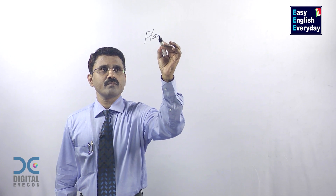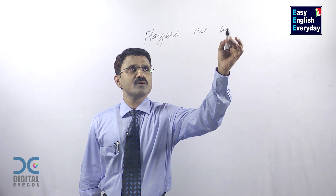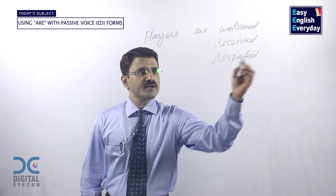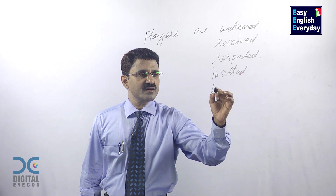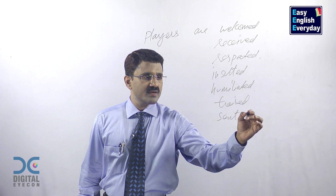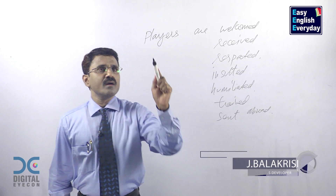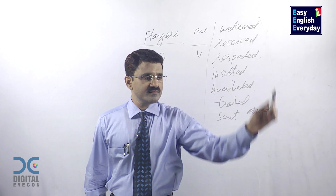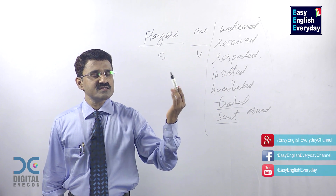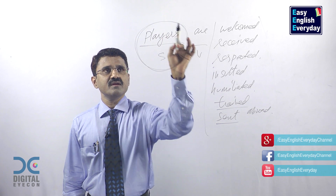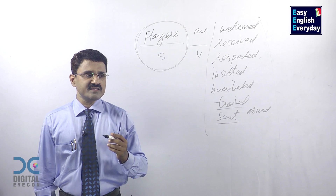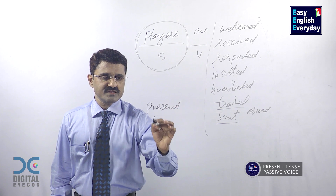Look at this sentence. Players are welcomed. Players are respected. Players are insulted. Players are humiliated. Players are trained. Players are sent abroad. Subject, verb, other words — they are called past participle forms. These are the actions done by somebody else, not by these people. They are not doing any action here. Something is happening to them. They are not the doers — they are the receivers. This is called present tense passive voice in English grammar.